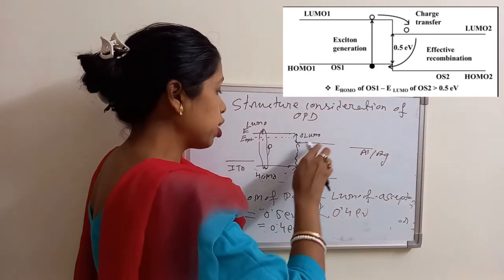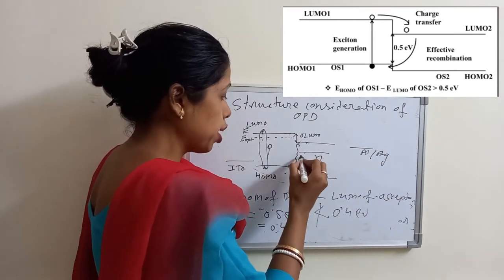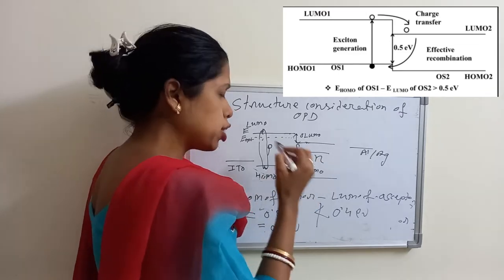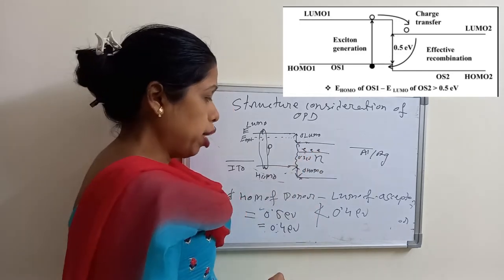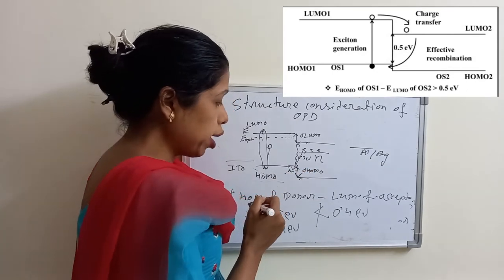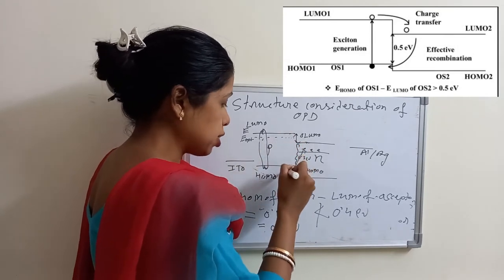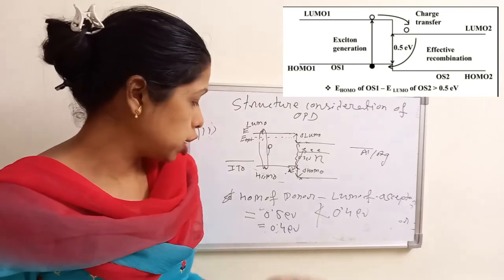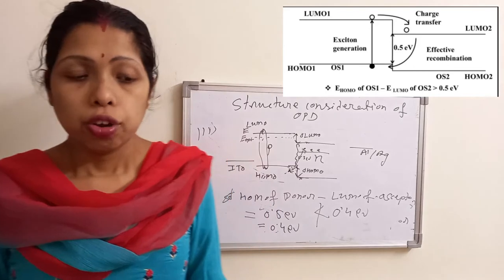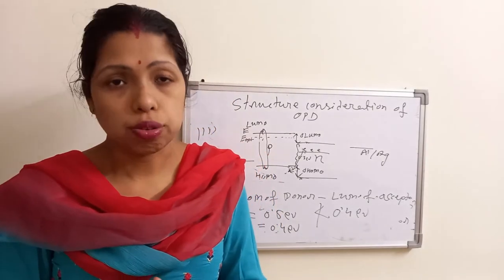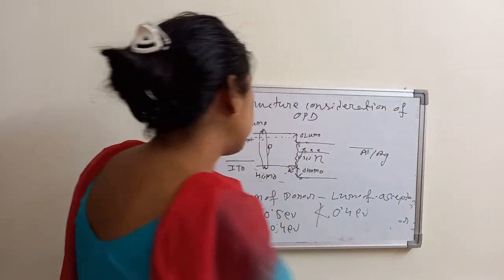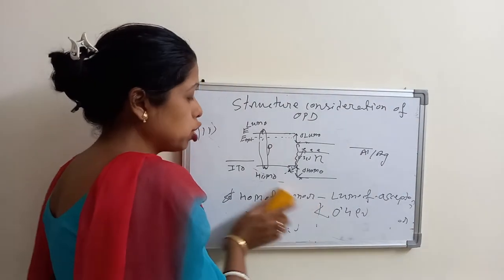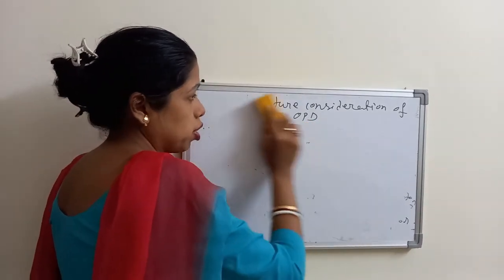What is geminate recombination? Suppose if this gap is only 0.3 eV, and electrons are still present in the LUMO level, this electron will be again recombined with the hole — the hole produced due to the exciton will be recombined with this electron. That is called geminate recombination. To overcome geminate recombination, this gap should not be less than 0.4 electron volt. These are the three criteria we have to follow for designing an organic photodetector by choosing the P-type semiconductor and the N-type acceptor semiconductor.